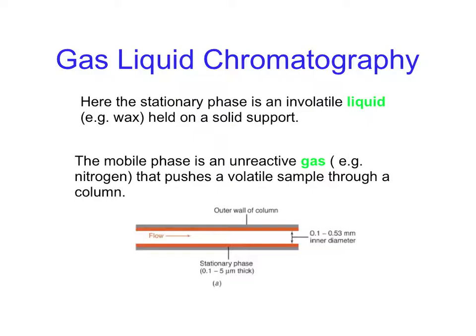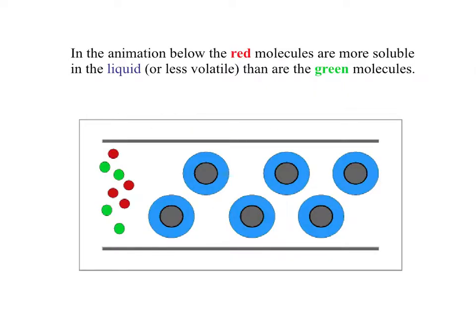However, in gas chromatography, the stationary phase is a non-volatile liquid contained within a small column, and the mobile phase is an unreactive gas passing through the column. The components of the mixture are carried through the column by this carrier gas. In the diagram below,